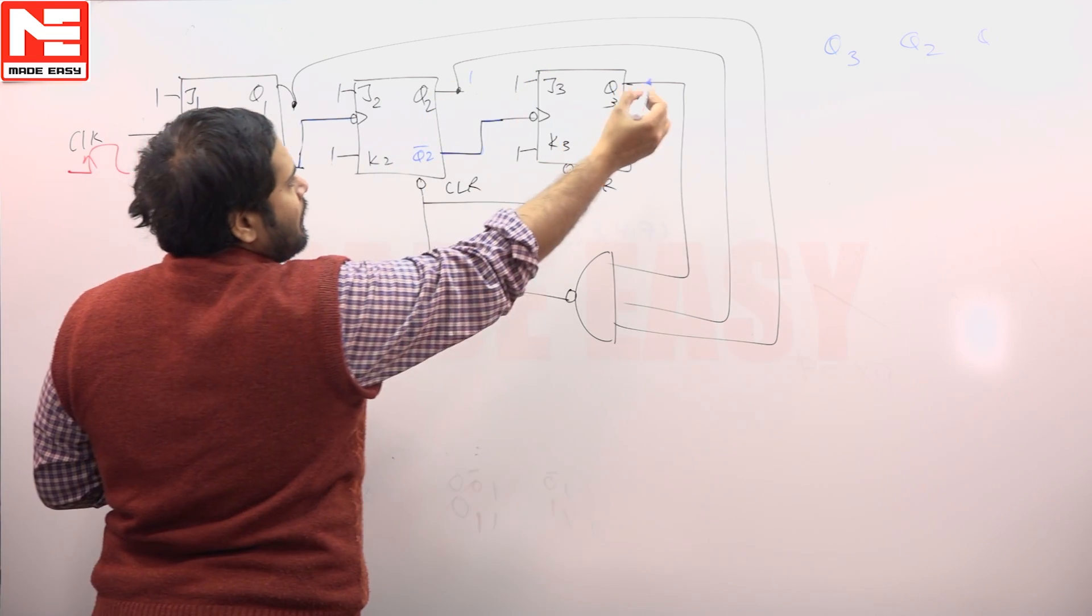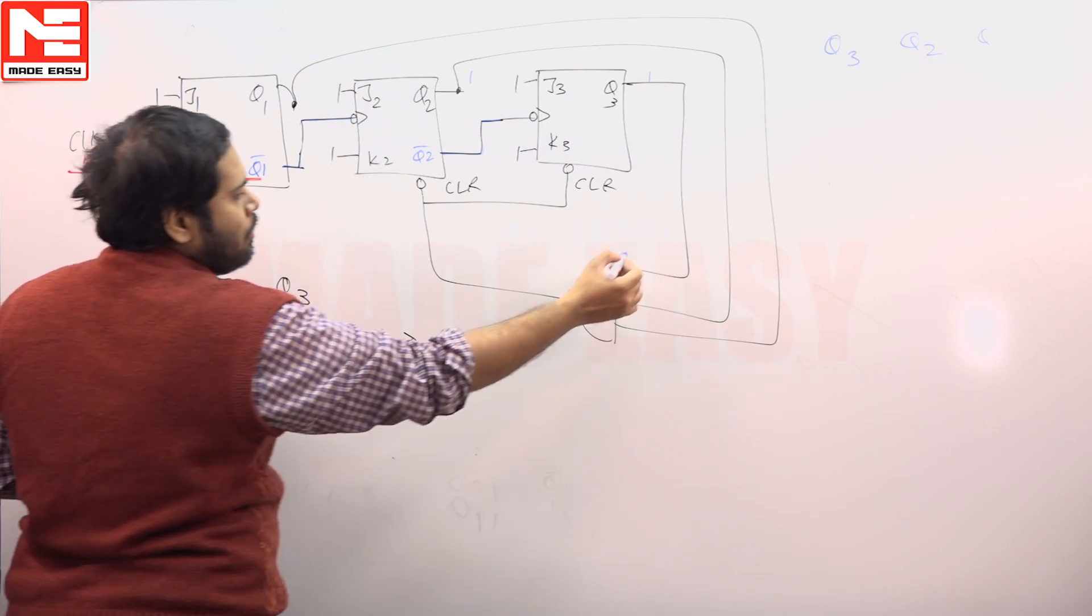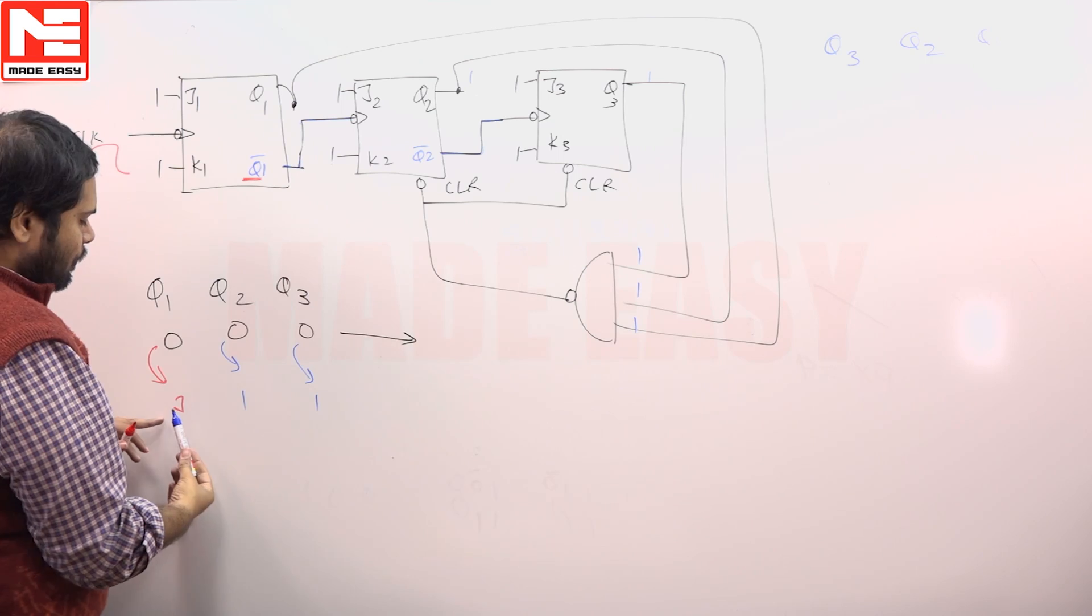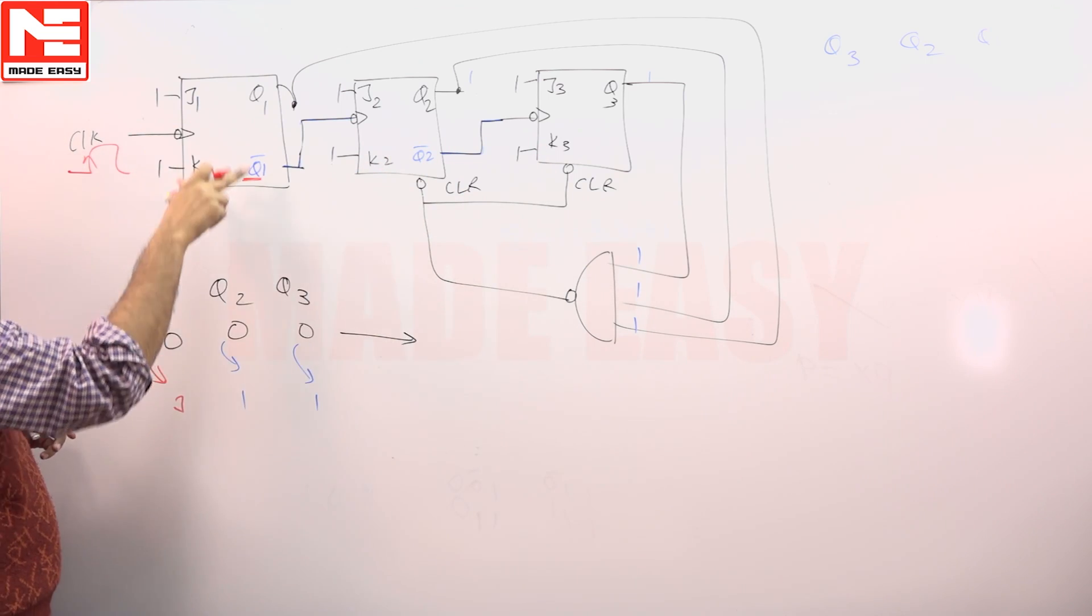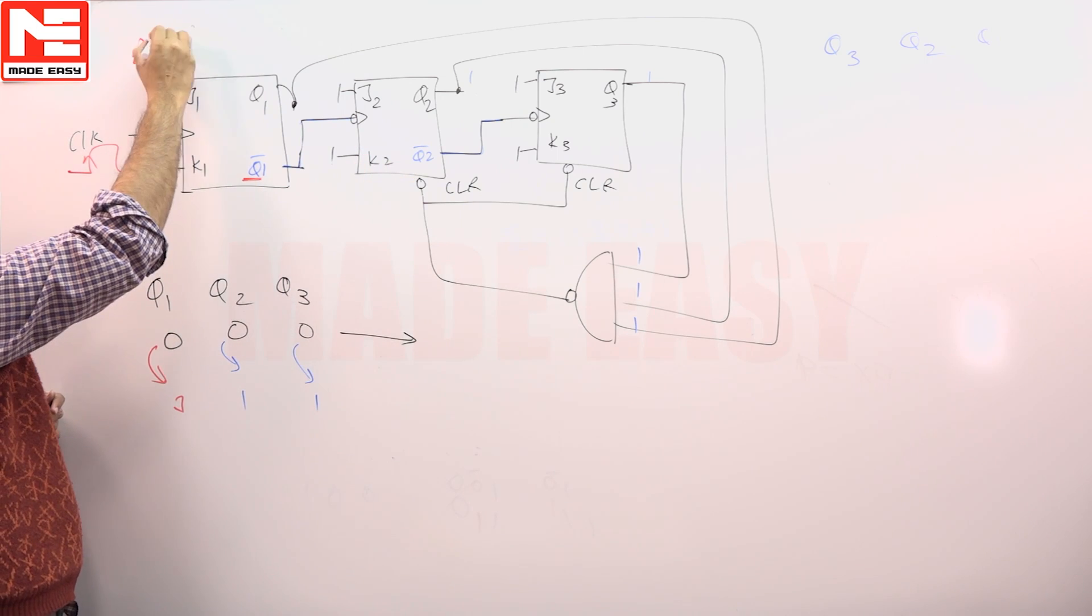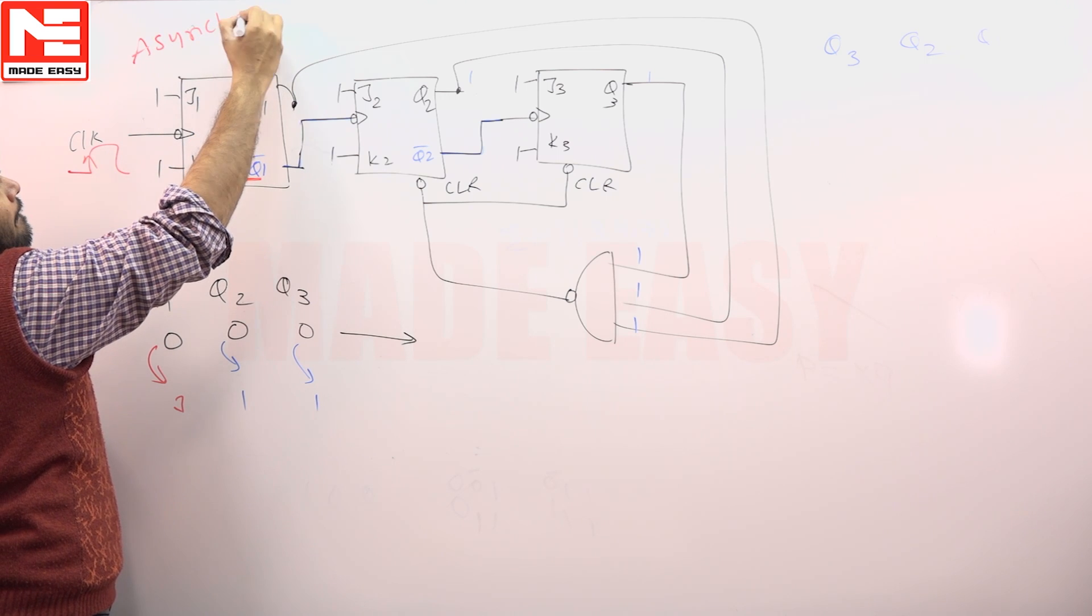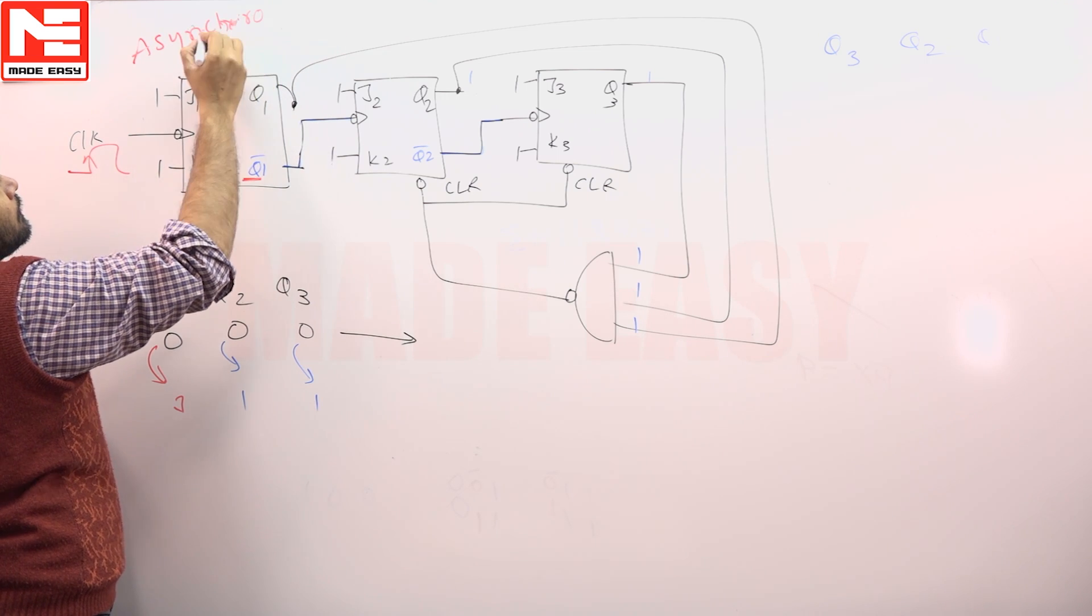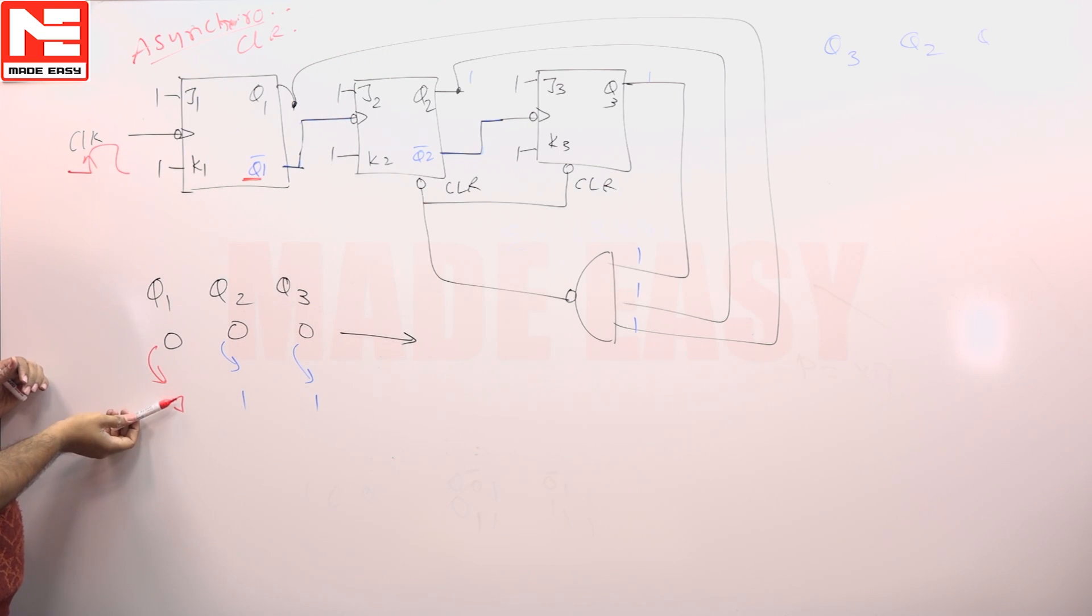So as 1 and 1 will come here, what is going to happen is—see, 1 1 1 is present here. When 1 1 1 comes here at this point, this is going to clear these two, but it is not cleaning everything. It is only clearing these two. So what exactly happens is an asynchronous clear.